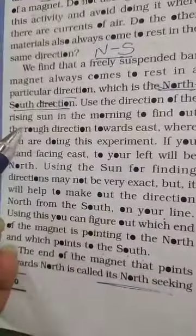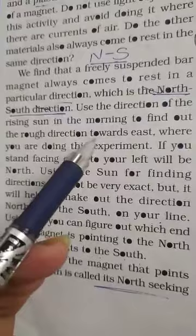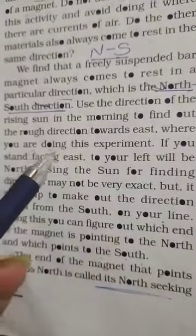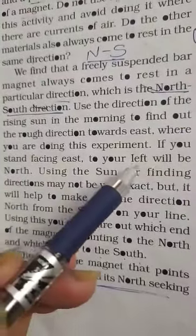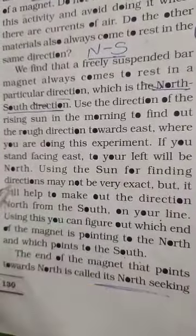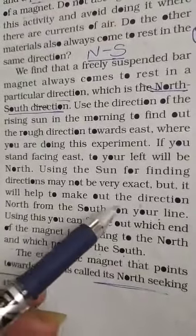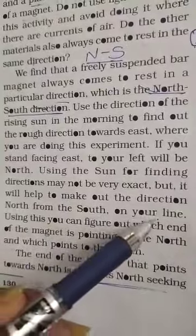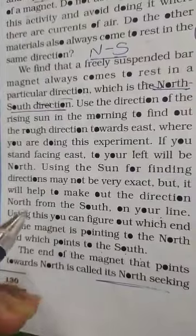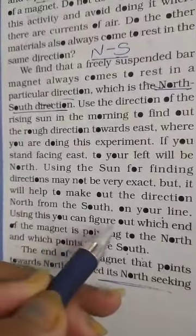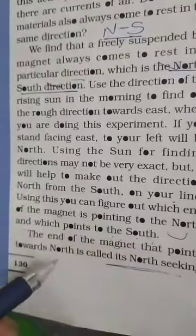Use the direction of the rising sun in the morning to find out the rough direction towards east where you are doing this experiment. If you start facing east, to your left will be north. Using the sun for finding direction may not be very exact, but it will help to make out the direction north from the south on your line. Using this you can figure out which end of the magnet is pointing to the north and which is toward the south.